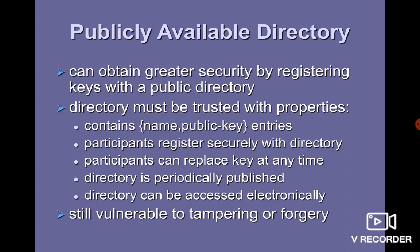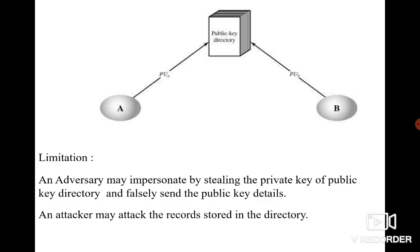The second method is the publicly available directory. Here we maintain one public directory, and everyone must register into that directory before getting public keys. The directory should be trusted and have the following properties: the directory entry contains the name and the public key; participants register securely with the directory; participants can replace their keys at any time; the directory is periodically published to all receivers; and it should be accessed electronically. Still, we have the disadvantage of tampering or forgery.